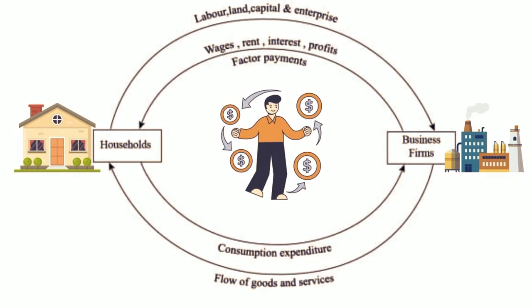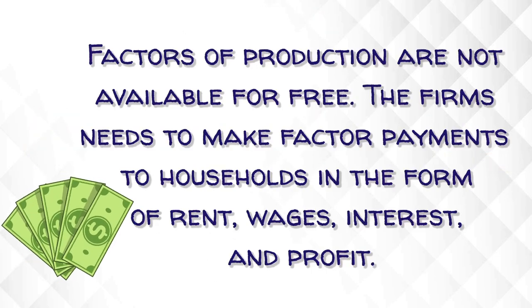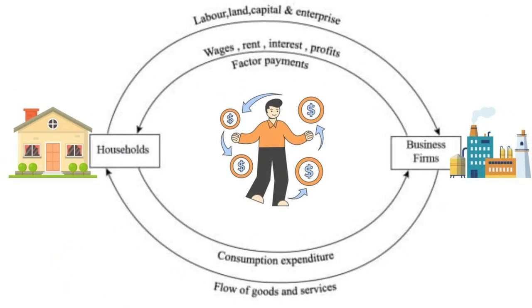Let us convert H2O to a complete diagram representing the circular flow of income, two-sector model. Since the entire economy is divided into household and firms, firms need factors of production to produce goods — individuals from households to provide labour, land to build factories, capital and entrepreneurs to run their businesses. The flow of factors of production from household to firms is represented by the upper loop in the diagram. Factors of production are not available for free; firms need to make factor payments to households in the form of rent, wages, interest and profit. So the upper loop shows the flow of factor services from household to firms and the corresponding flow of factor payments from firms to households.